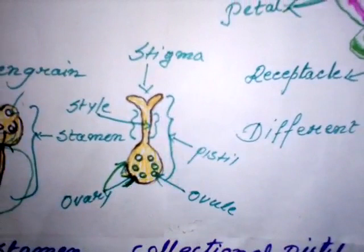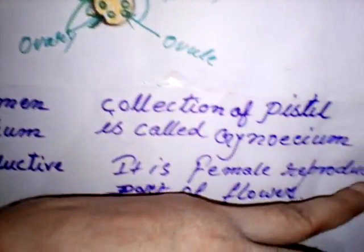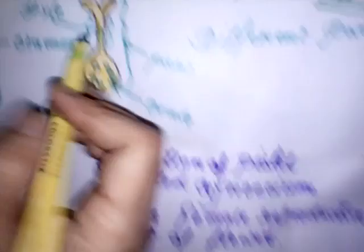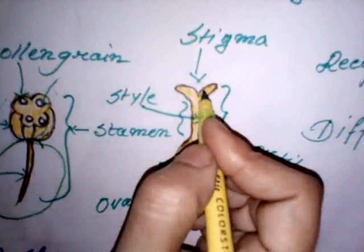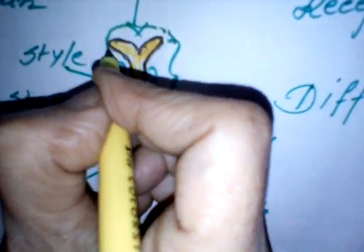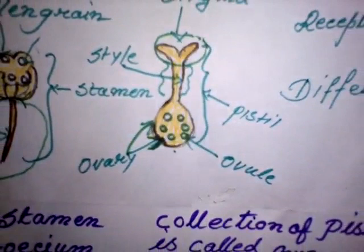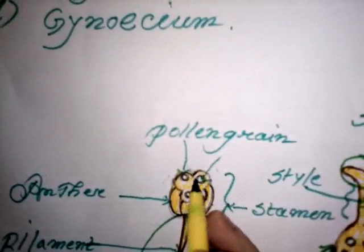The fourth inner part of the flower is pistil. Collection of pistil is known as gynoecium. It is the female reproductive part of a flower. Pistil has three parts: stigma, style and ovary. Stigma is the top part of pistil where pollen grains get trapped during pollination. Transfer of pollen grains from anther to stigma is known as pollination.